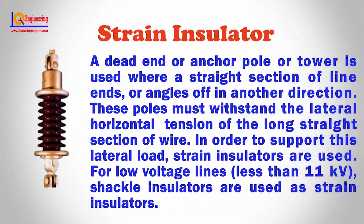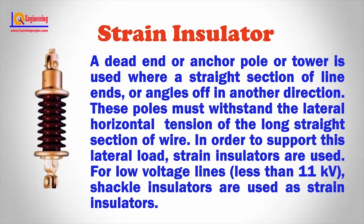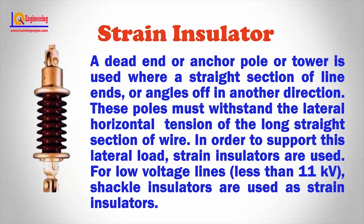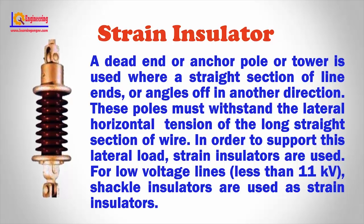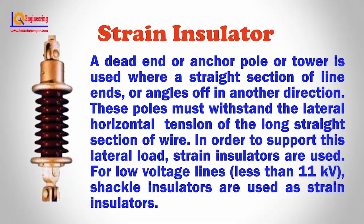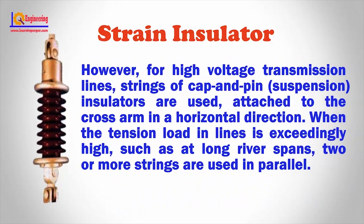Strain insulator: A dead end or anchor pole or tower is used where a straight section of line ends or angles off in another direction. These poles must withstand the lateral horizontal tension of the long straight section of wire. In order to support this lateral load, strain insulators are used. For low voltage lines less than 11 kV, shackle insulators are used as strain insulators. However, for high voltage transmission lines, strings of cap and pin suspension insulators are used, attached to the cross arm in a horizontal direction. When the tension load is exceedingly high, such as at long river spans, two or more strings are used in parallel.